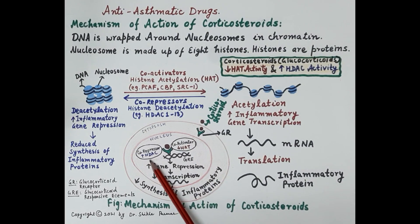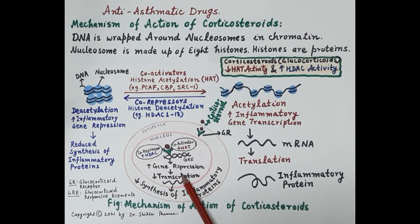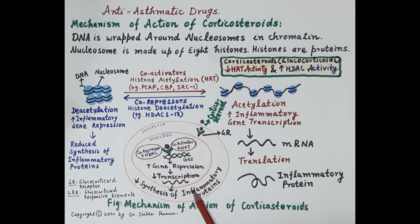The pharmacological action of glucocorticoids is that they reduce the histone acetyltransferase activity of coactivators, resulting in reduced addition of the acetyl group to histones. Additionally, glucocorticoids enhance histone deacetylase activity, meaning they enhance the removal of the acetyl group from histones. This results in suppression of inflammatory genes — reduced transcription and reduced translation — leading to reduced synthesis of inflammatory proteins.